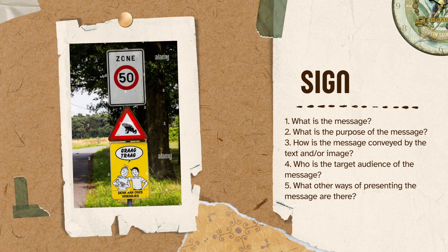The purpose of this sign is to warn the drivers that there might be a toad or a frog that is about to cross the road. The message in this sign is conveyed through symbols such as the photo of a frog and through text which is warning us.